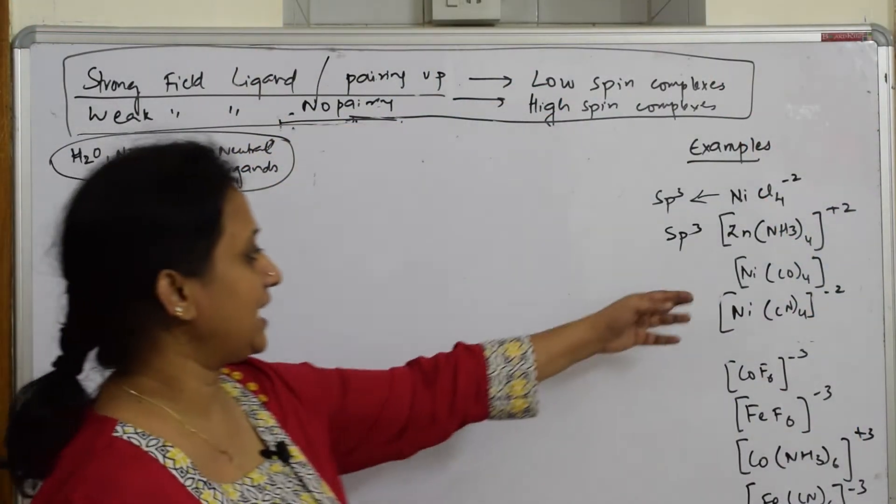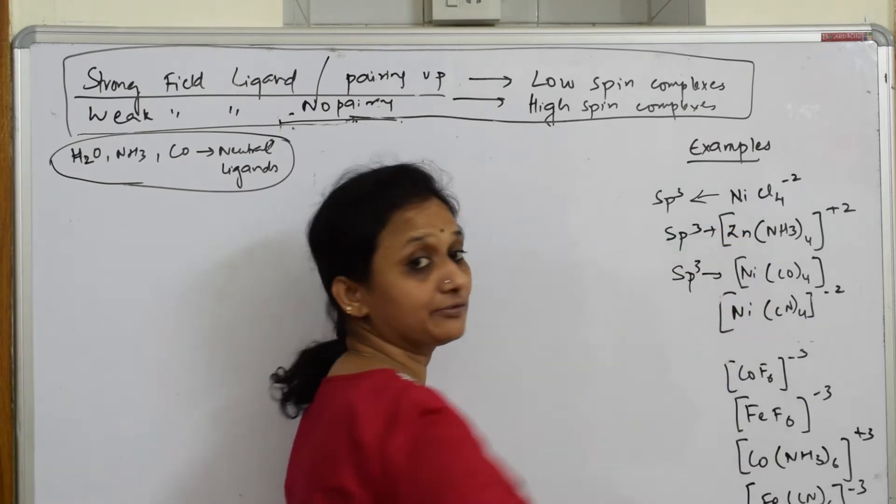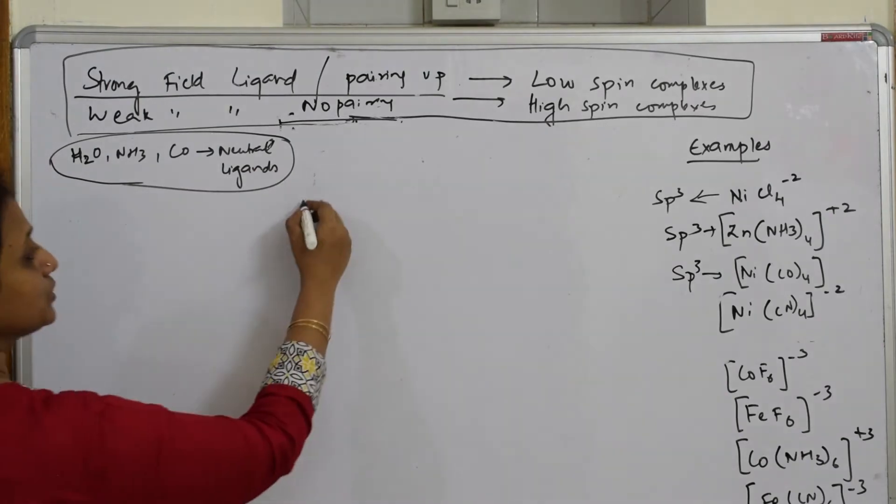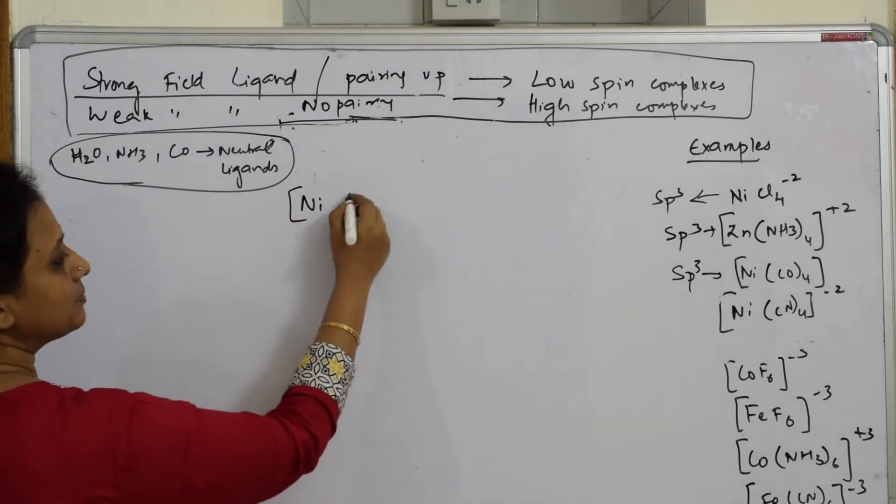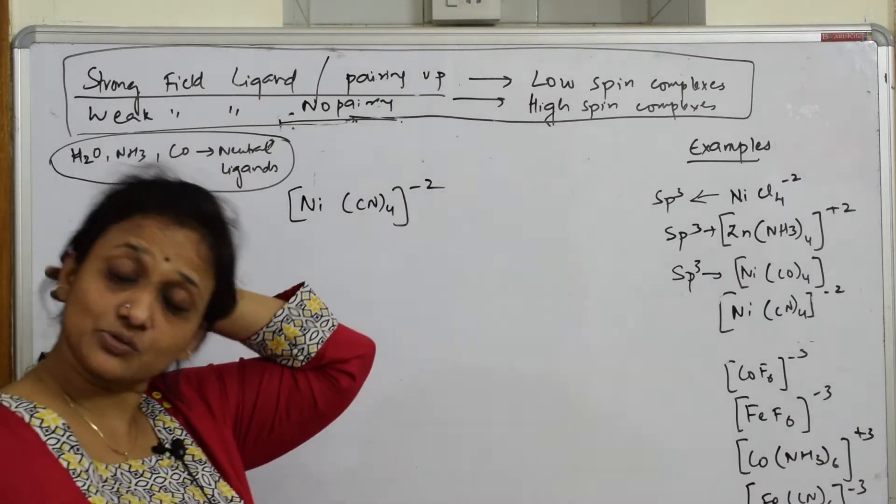Now we have already seen that NiCO4 also has sp3 hybridization, so you have to be very careful. Now let's come back and see the next example. If this example is given to you, what should you write first?